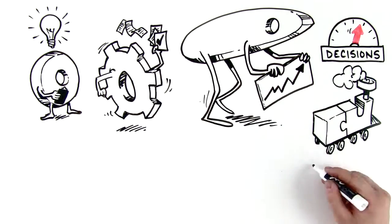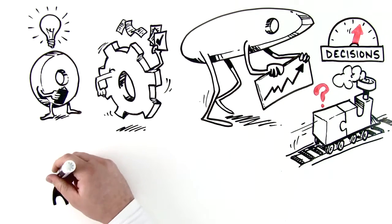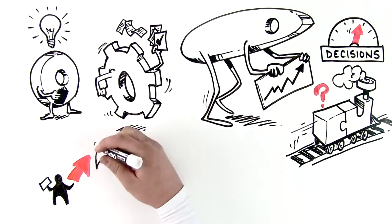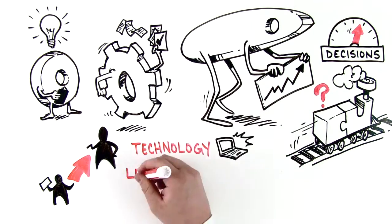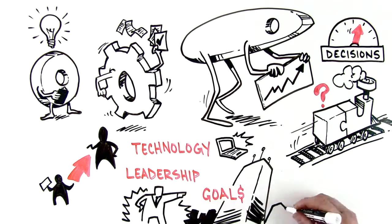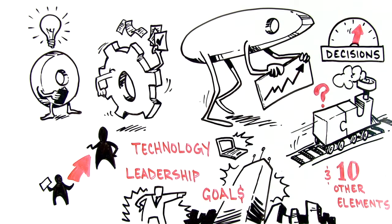We need to make sure the organizational design is aligned. But organizational design is more than just the structure of the company. Who reports to whom? It's about the technology, the leadership, the goals, and ten other dimensions that describe the design.